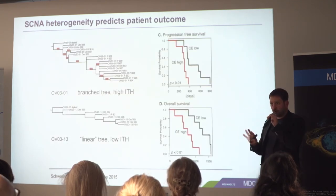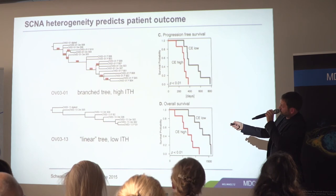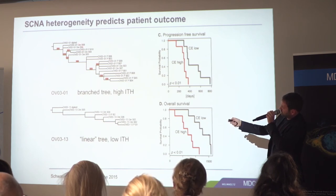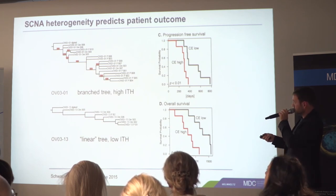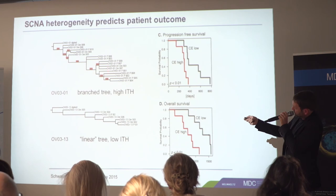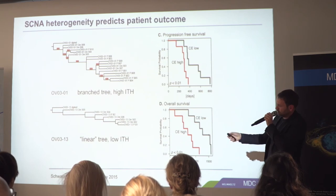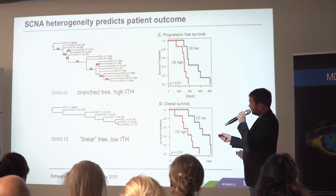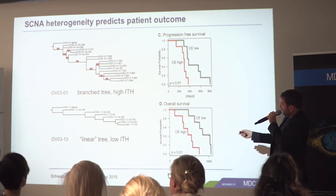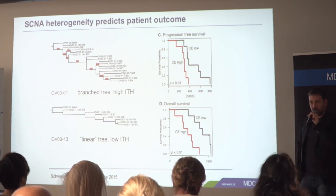At that time it wasn't even clear how much heterogeneity actually affects patient outcome and survival. What we saw in our cohort were two different types of patients: one showing a very branched tree — one patient had about 20 different metastases — and patients showing a more ladder-like, linear type of evolution where one metastasis after another branches out. We called these high and low intratumor heterogeneity, and we saw a significant difference in progression-free survival as well as overall survival between these two patient groups.